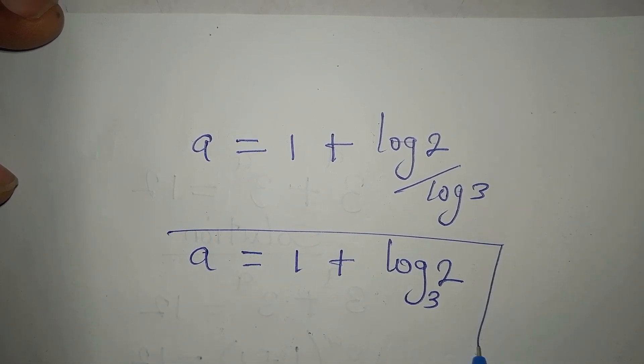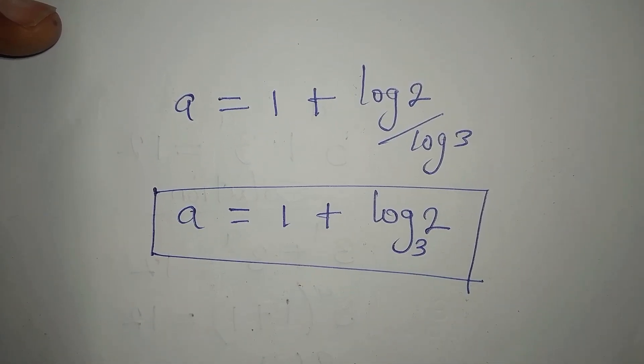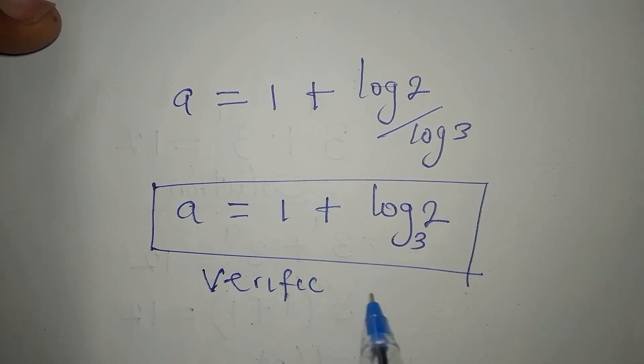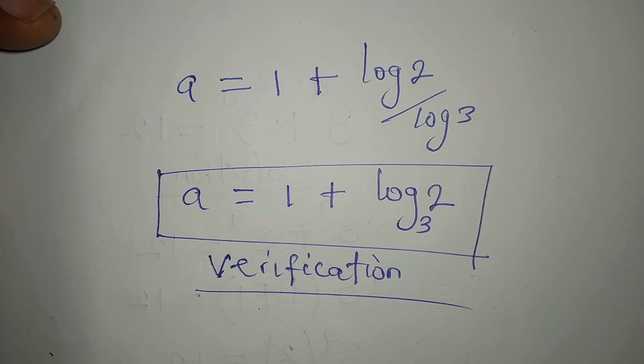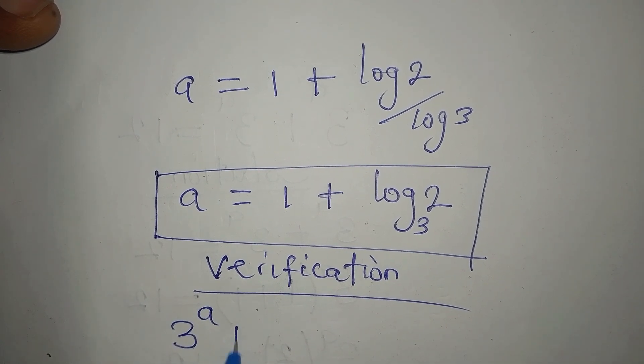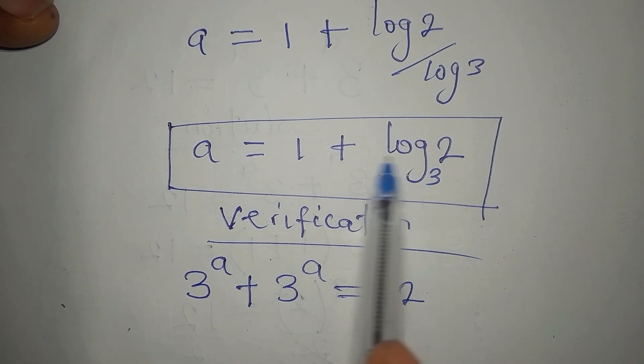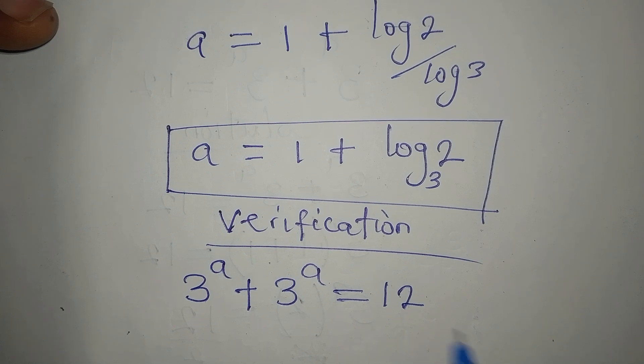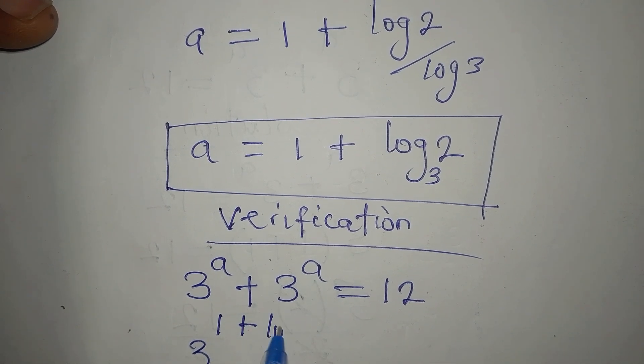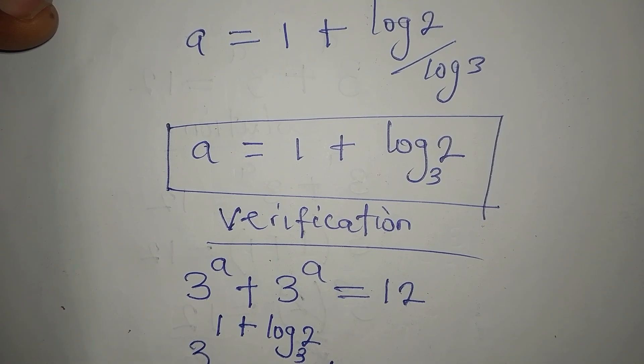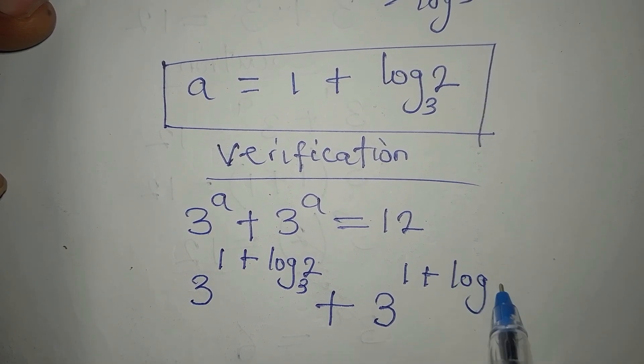But then we are going to verify right away. Okay, verification. The original equation is 3 to the power of a plus 3 to the power of a equals 12. And the question is, if we put this into this, will it give 12? That's what we want to check. So we have 3 to the power of 1 plus log 2 to base 3 plus 3 again to the power of 1 plus log 2 to base 3.